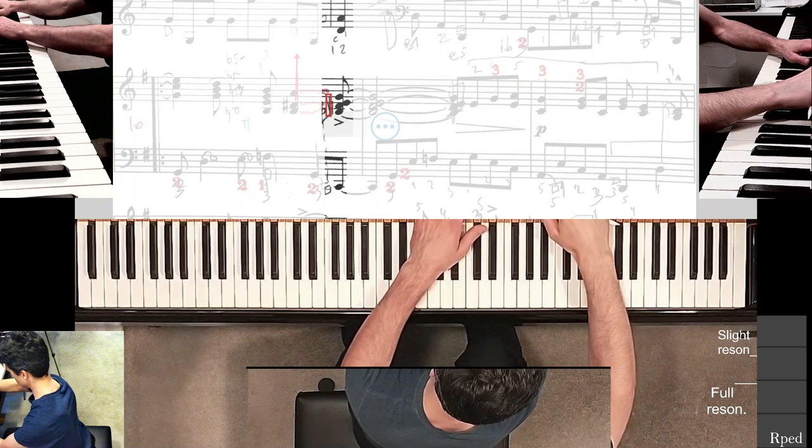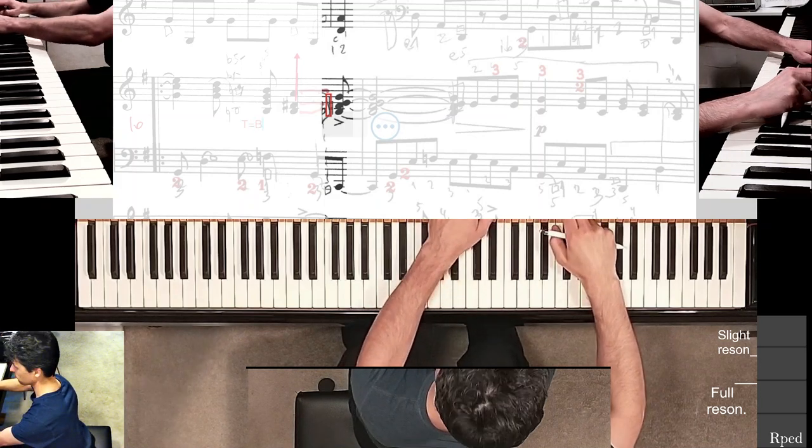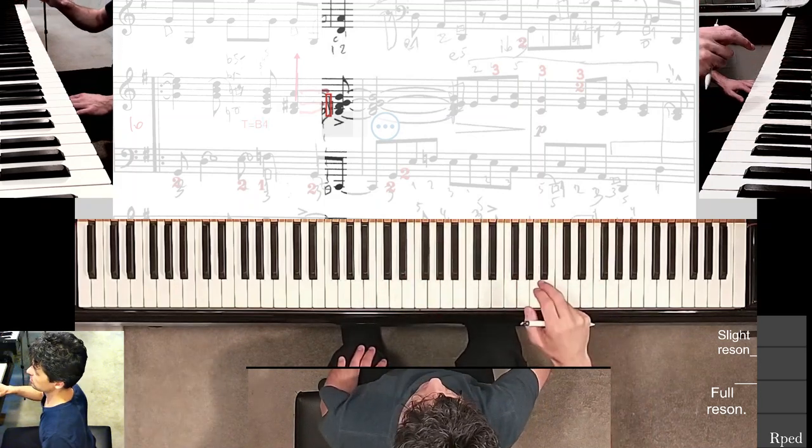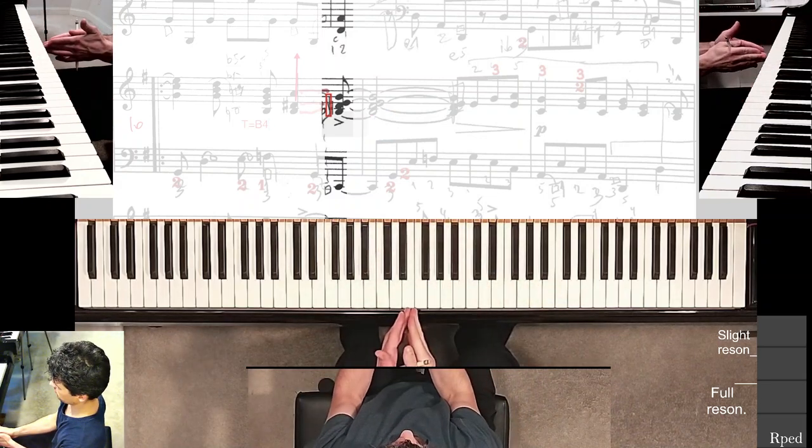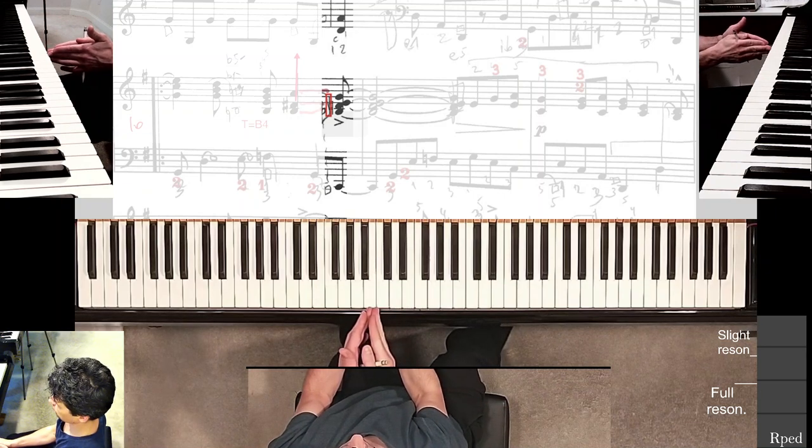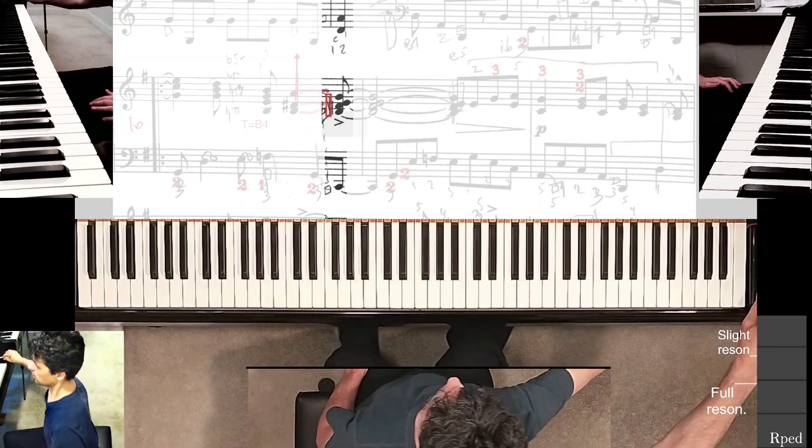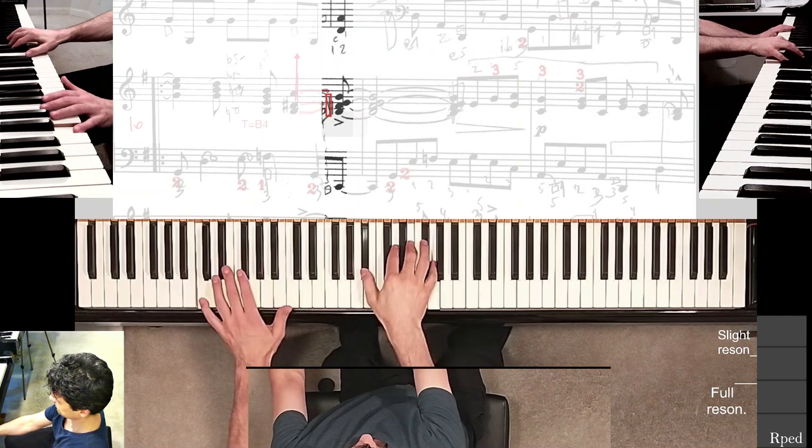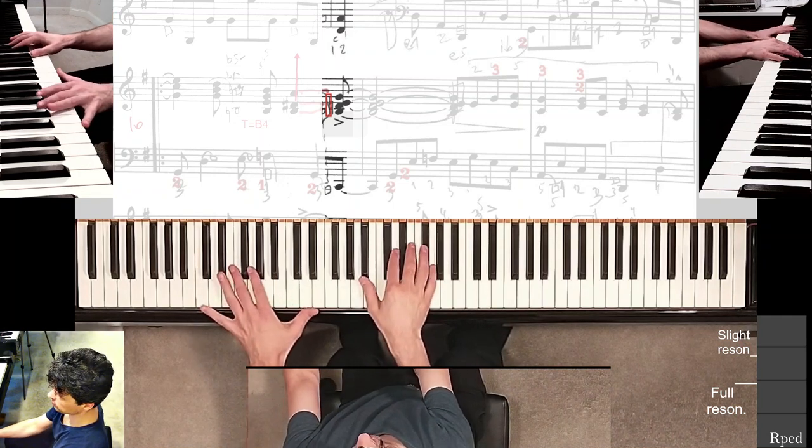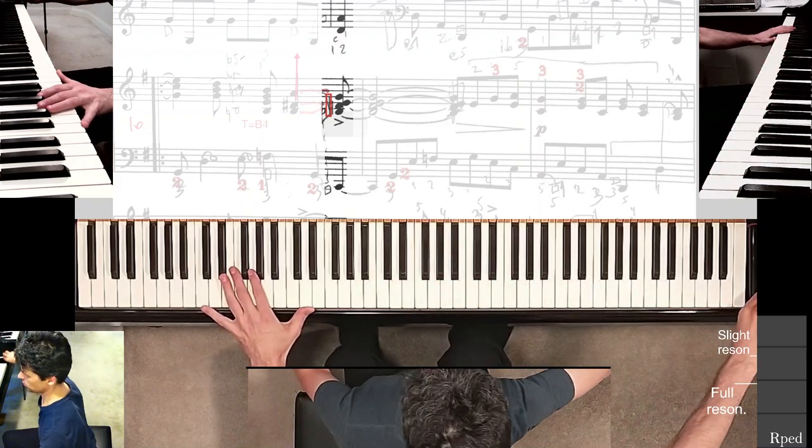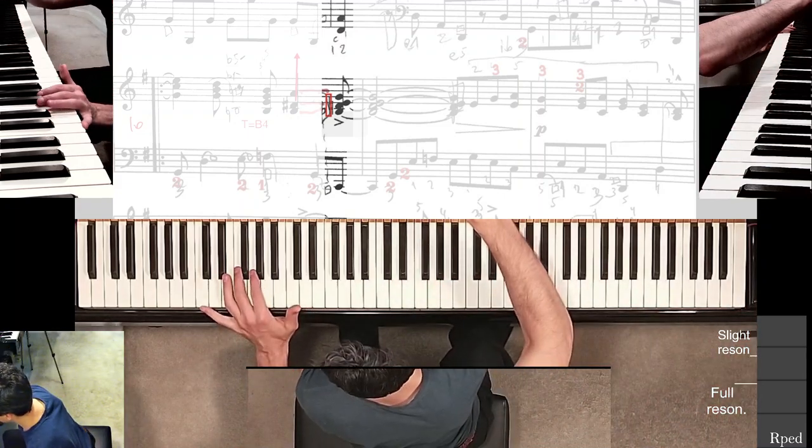T equals B4, and all that means is this is E5 middle E, this is B4 right here. Okay so here I am making sure to prepare the rest of my fingers. Not quite sure what that two is doing there, I'll get rid of it.